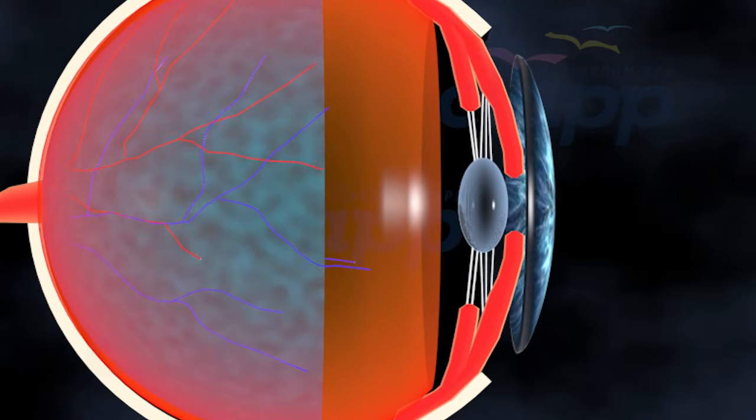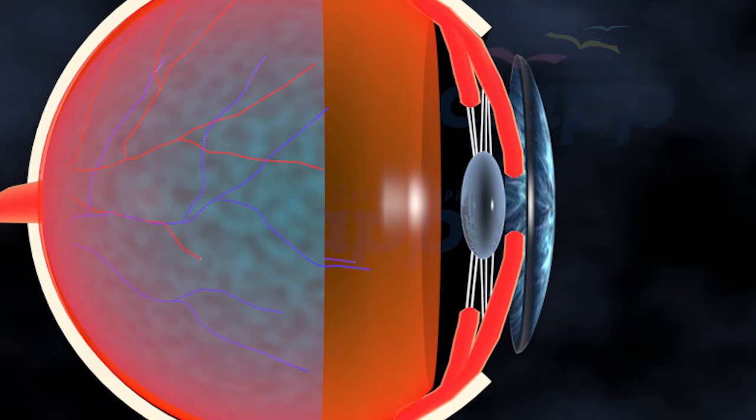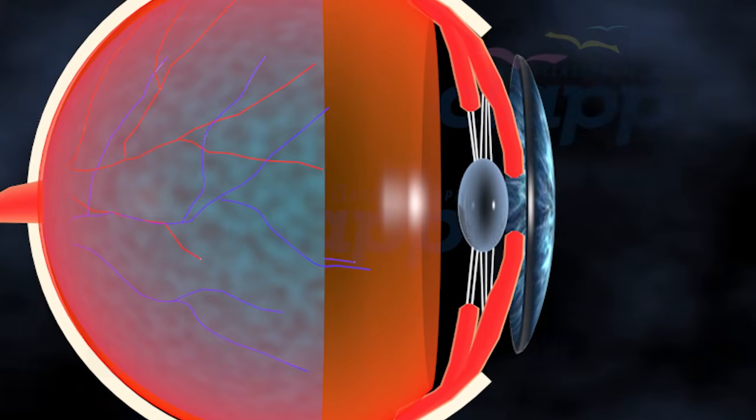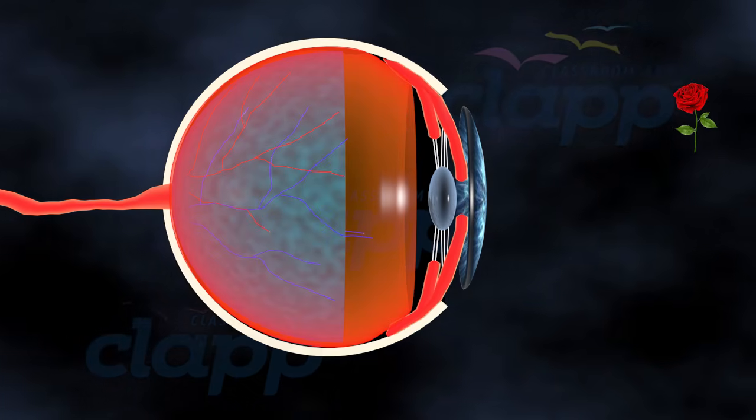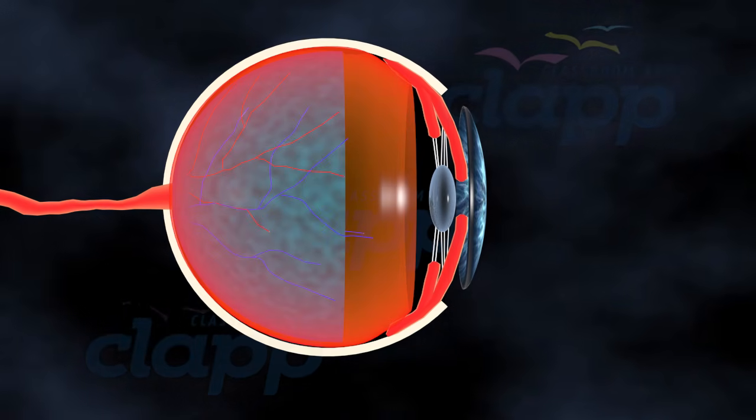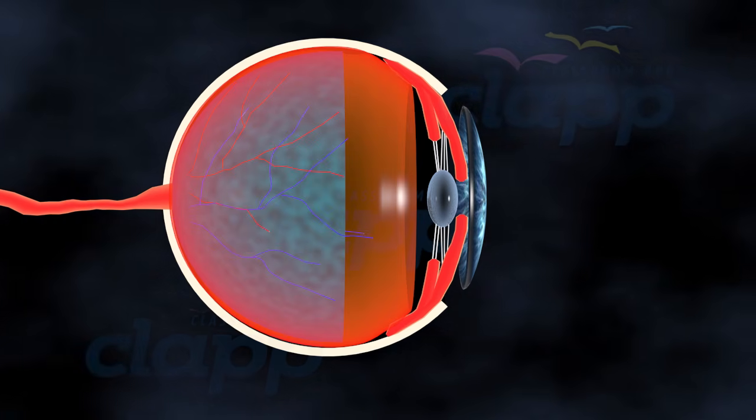Accommodation is made possible by the action of the ciliary muscles surrounding the lens. When you shift your focus from near to far or vice versa, these muscles contract or relax, causing the lens to change its shape accordingly.